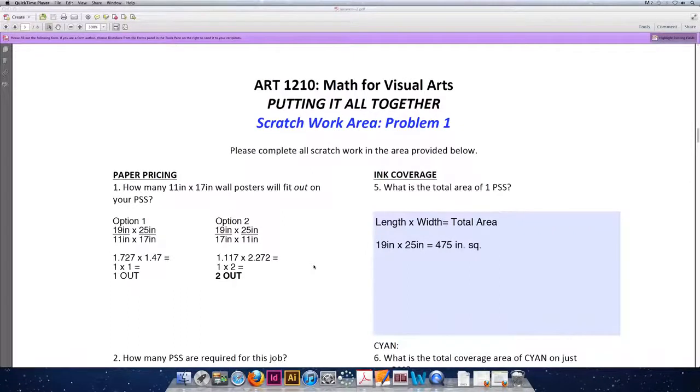of one press-sized sheet is. The reason we're doing this is we're finding what 100% coverage of our press-sized sheet would be. From there, we can then deduce, if cyan only covers 10% of the sheet, what is 10% of the total coverage area?